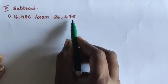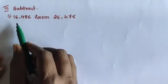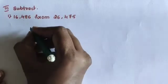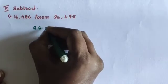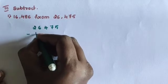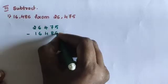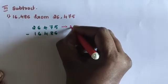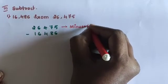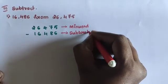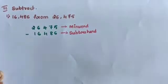The larger number 26,475 is the minuend. 16,486 is the subtrahend. Arrange the numbers in place value columns: 26,475 subtracted by 16,486. Then find the difference.